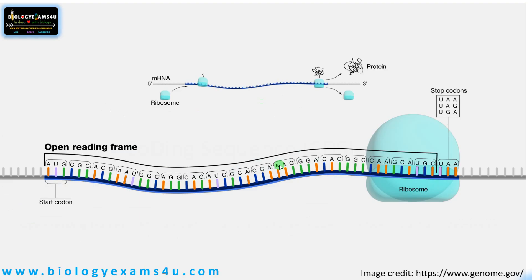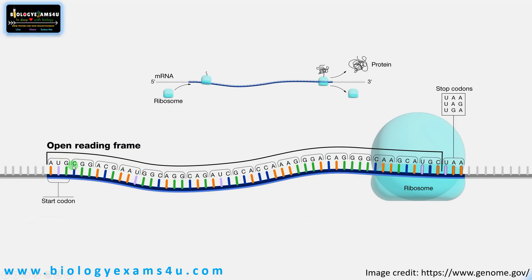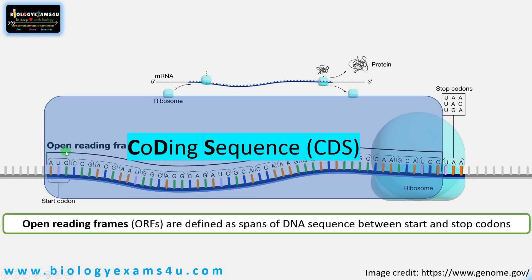Taking the previous example: this is an open reading frame shown as an mRNA molecule, and it is a coding sequence since there is no non-coding sequence in this processed mRNA — only exons are present after mRNA processing. A coding sequence is a region of DNA or RNA whose sequence determines the sequence of amino acids in a protein. An ORF is a continuous stretch of DNA or RNA codons from a start codon to a stop codon but may contain coding or non-coding sequences, whereas a coding sequence is a region of DNA or RNA that determines amino acid sequence and does not include introns.